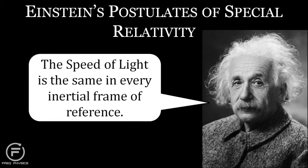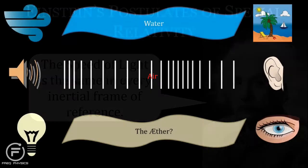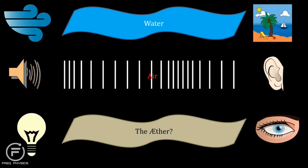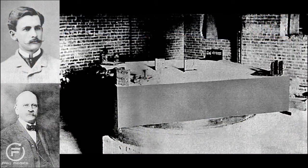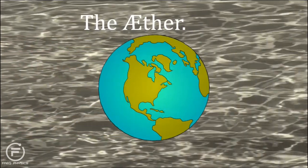In the late 1800s, it was thought that light waves travelled through something called the luminiferous ether, just like water waves need water to move through. In 1887, two American scientists, Albert Michelson and Edward Morley, attempted to measure the ether wind as the Earth moved through the ether.